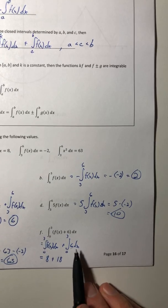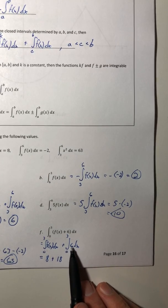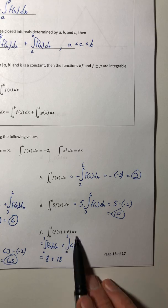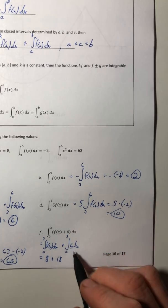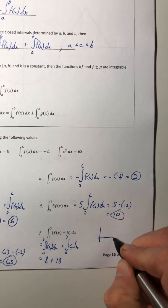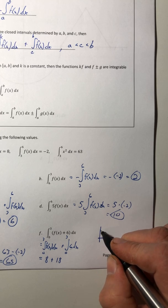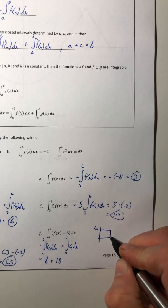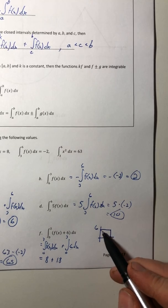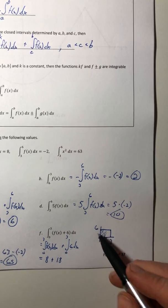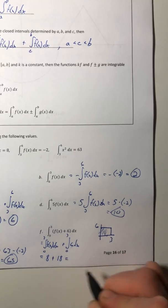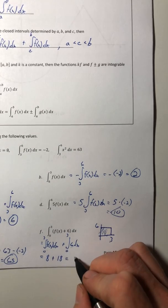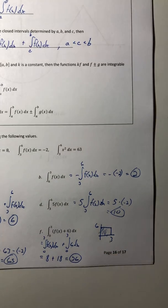If you remember from the previous video, when it asked us to figure out these values, we could use a graph. Well, the graph of 6, that's just a horizontal line at 6, and I'm going from 0 to 3. So the area of that rectangle is 18. So that's how I knew it was 18. So 26.